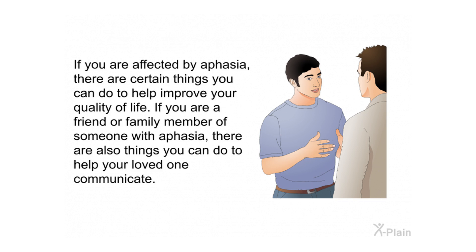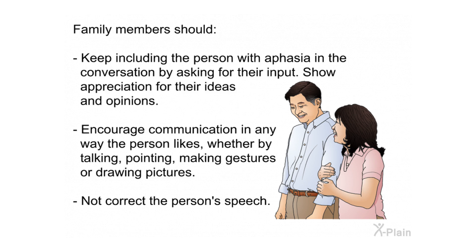If you are affected by aphasia, there are certain things you can do to help improve your quality of life. If you are a friend or family member of someone with aphasia, there are also things you can do to help your loved one communicate. Family members should keep including the person with aphasia in the conversation by asking for their input, show appreciation for their ideas and opinions, and encourage communication in any way the person likes — whether by talking, pointing, making gestures, or drawing pictures. Do not correct the person's speech.